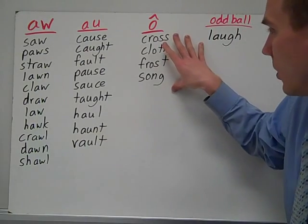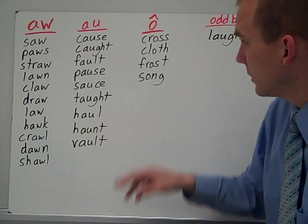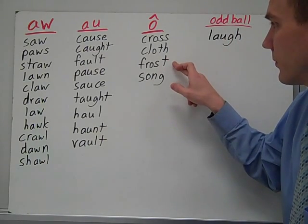And then finally we have the o words, which just have an o in them, but say aw. So you have cross, cloth, frost, and song.